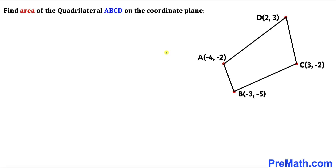Welcome to pre-math. In this video we are going to calculate the area of the given quadrilateral ABCD on the coordinate plane, such that vertex A is (-4, -2), vertex B is (-3, -5), vertex C is (3, -2), and finally vertex D is (2, 3).